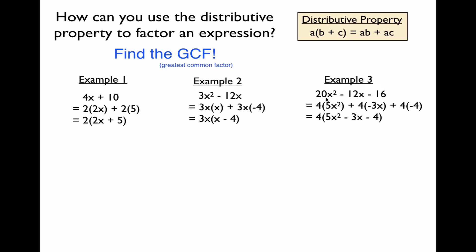Now let's look at example 3: 20x squared minus 12x minus 16. You might be tempted to factor out x, but x is not common to all three terms. So we only look at the numeric terms 20, 12, and 16 — and they all share a factor of 4. Factoring out the 4 leaves us with 4 times the quantity 5x squared minus 3x minus 4.